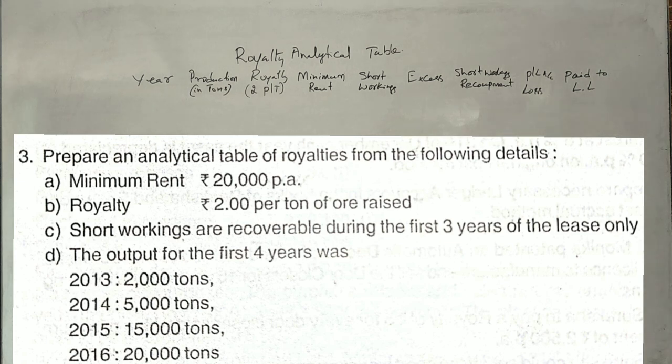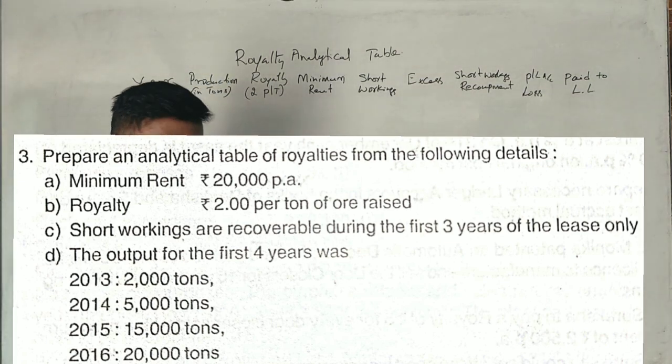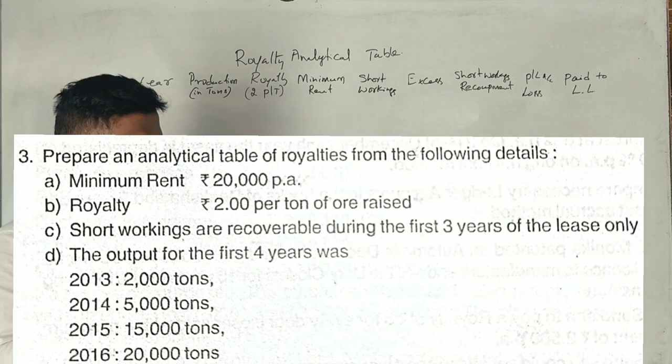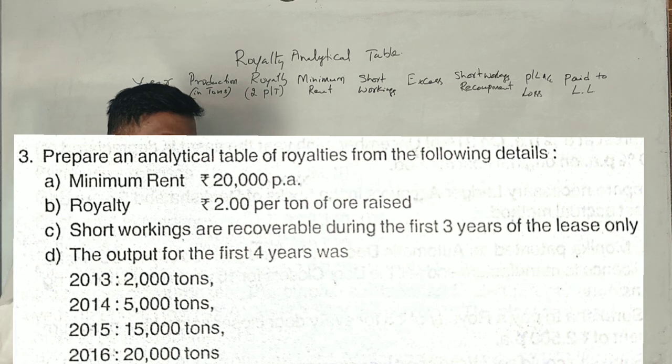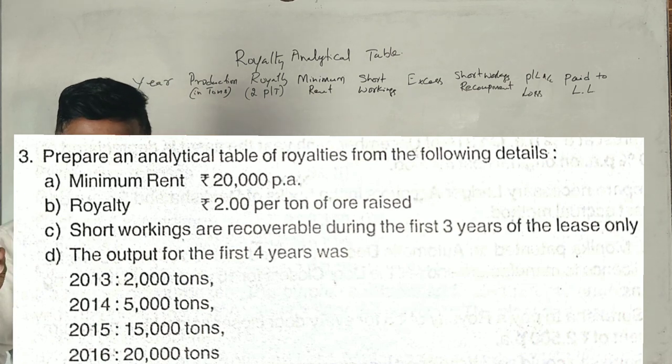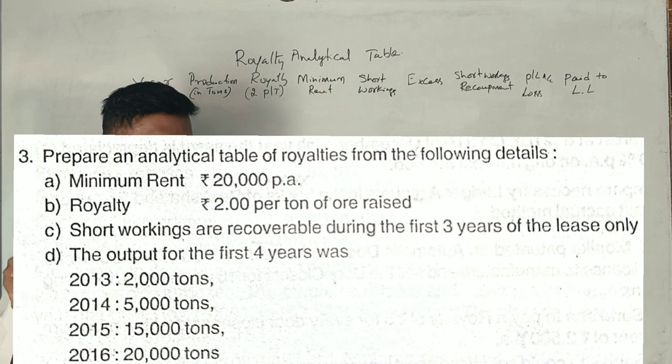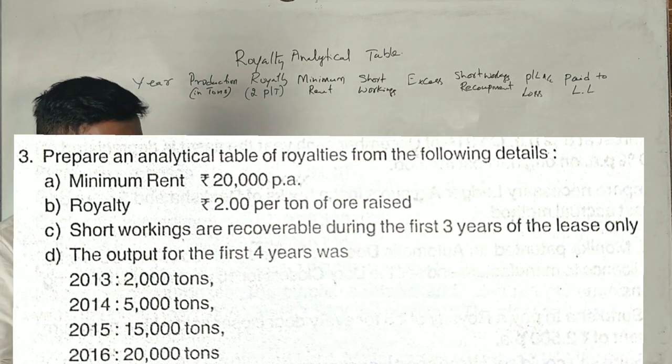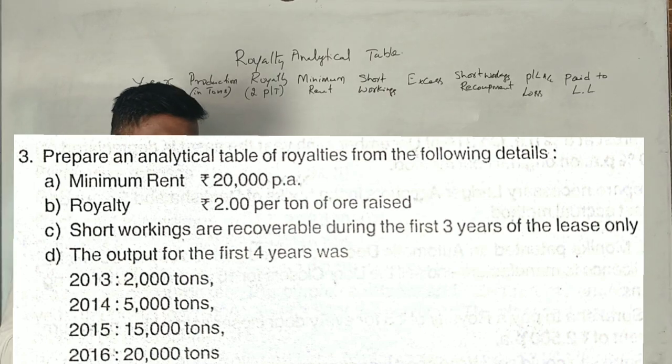A 2017 exam question asks to prepare an analytical table of royalties from the following details: minimum rent ₹20,000 per annum, royalty ₹2 per ton of ore raised, short workings recoverable during the first three years of the lease only. The output for 2013, 2014, 2015, and 2016 was 2,000 tons, 5,000 tons, 15,000 tons, and 20,000 tons respectively.